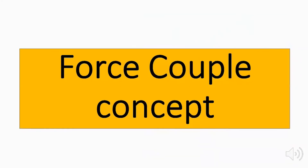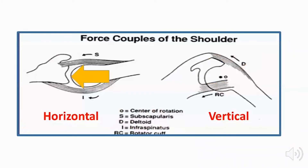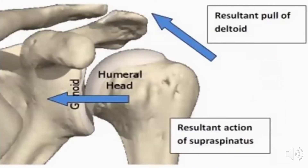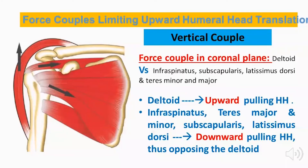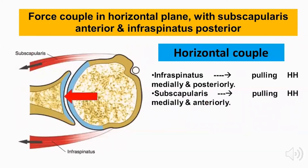The force couple concept involves two force couples on the glenohumeral joint: a horizontal couple and a vertical couple. The vertical couple acts between the deltoid versus the infraspinatus, subscapularis, latissimus dorsi, teres minor, and teres major, preventing the upward pull of the deltoid and keeping the humeral head centered on the glenoid. The horizontal couple is maintained in the horizontal plane between the subscapularis anteriorly and the infraspinatus posteriorly, with the infraspinatus pulling the humeral head medially and posteriorly and the subscapularis pulling it medially and anteriorly.